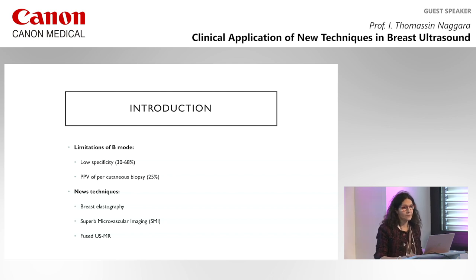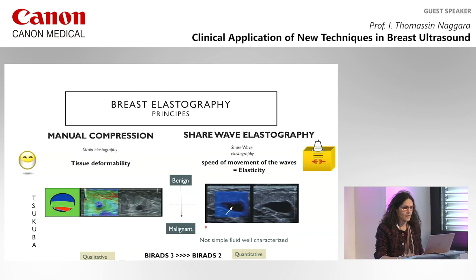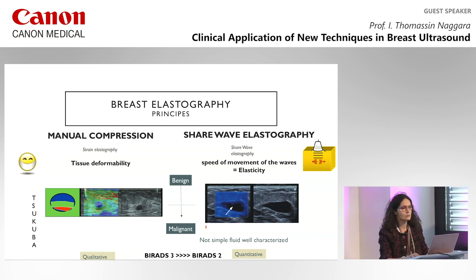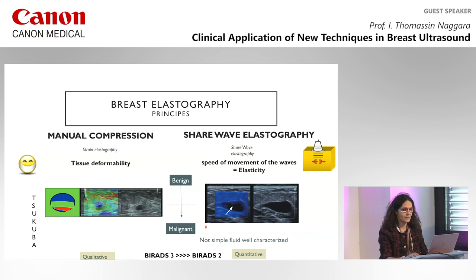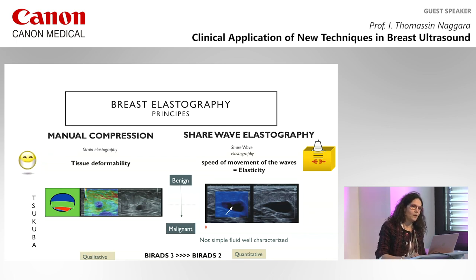Very quickly, because I think most of you know the principle of elastography — there are two types. The strain elastography consists in manual compression and the evaluation of tissue deformability, with some classification to evaluate qualitatively the deformability. The second type is shear wave elastography, which evaluates the speed of movement of the waves and the elasticity.